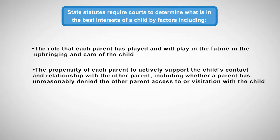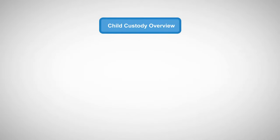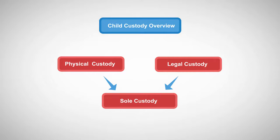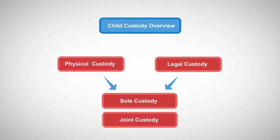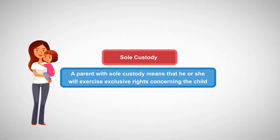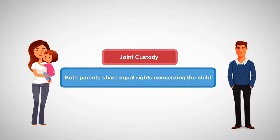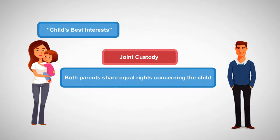Courts also consider the propensity of each parent to actively support the child's contact and relationship with the other parent, including whether a parent has unreasonably denied the other parent access to or visitation with the child. There are two kinds of custody: physical custody and legal custody. For each, a parent may be awarded sole custody, or two parents may be awarded joint custody. A parent with sole custody means that he or she will exercise exclusive rights concerning the child, while joint custody means both parents share equal rights. To determine whether sole or joint custody should be awarded, the child's best interest standard is used.